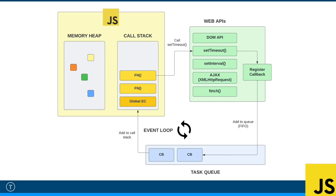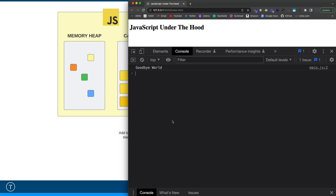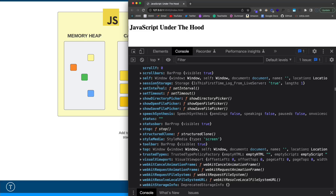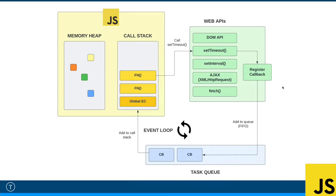These web APIs are on the global object. If you watched the last video, when we run a JavaScript file it creates a global execution context, and in the creation phase it creates the global object. That's always available to us — if I type 'window', that's our global object. If we look for setTimeout, you can see we have setTimeout and setInterval. These are actually web APIs in the browser. A lot of people think setTimeout is part of JavaScript, but it's not part of the JavaScript spec — it's an API in the browser that uses an internal timer.